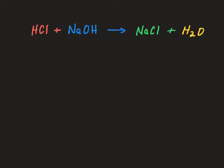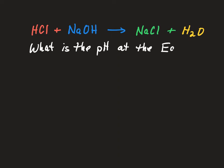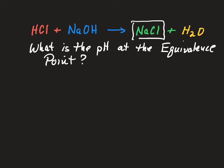Let's consider the chemistry of our titration and ask: what is the pH at the equivalence point? One way of figuring this out is to focus on our product salt. We know we got water, and water is going to do its thing. But what's going to happen with sodium chloride?